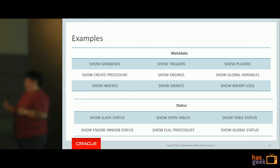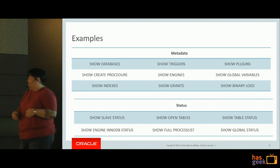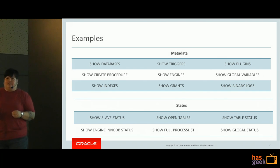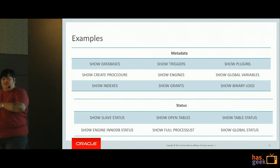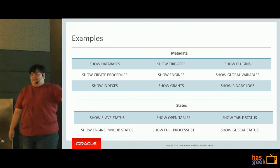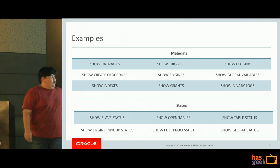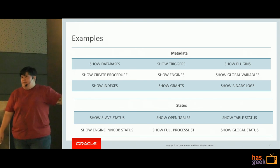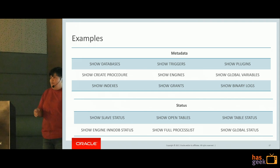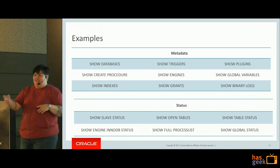There's also SHOW TRIGGERS, SHOW PLUGINS, SHOW CREATE PROCEDURE, SHOW STATUS, SHOW SLAVE STATUS if you're using replication, SHOW OPEN TABLES, and SHOW TABLE STATUS which tells you things like how many rows are in the table and how big the table is. All of these commands have their own manual pages. The reason I'm telling you about the SHOW command is so that as a future administrator, you can look and say 'there's probably a SHOW command for that' and hit the manual to look it up.